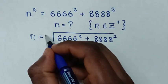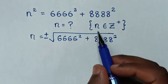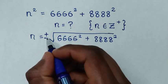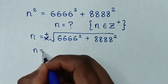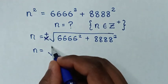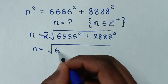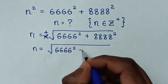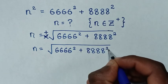This gives plus or minus. But the condition here is that n is an element of a positive integer, so the negative integer will cancel. Then n is equal to the square root of 6,666 squared plus 8,888 squared, taking only the positive root.